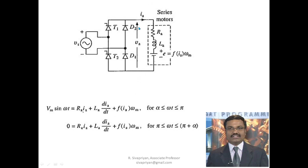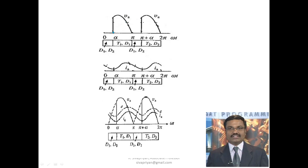During freewheeling time, diodes D1 and D2 are short-circuited, so the voltage becomes zero: 0 = ia·Ra + La·(dia/dt) + e, where e is again a function of ia and ωm. This freewheeling action is due to La, as discussed in the earlier videos.